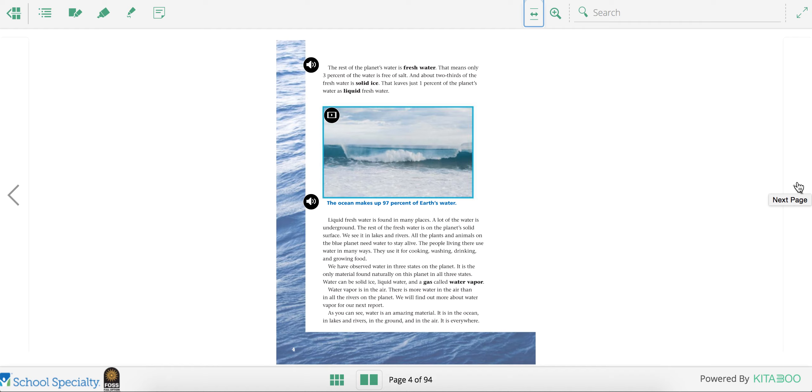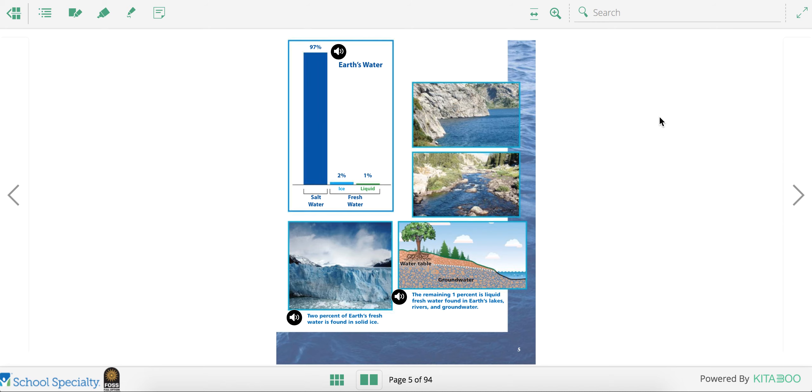Ice is solid water. Water is liquid. And then water vapor is water that's in gas form that's in the air.